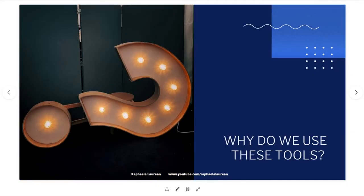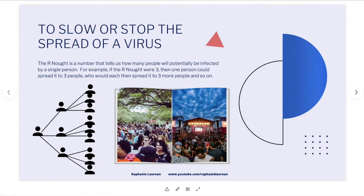Community tools include school closures, telecommuting, canceling large events, business closures, social distancing, and ultimately quarantine. Environmental tools include keeping surfaces clean, not wearing shoes in the house, and being careful what you touch so you don't accidentally pick up the virus. We use these tools to slow or stop the spread. The R0 is a number that tells us how many people will potentially be infected by a single person.